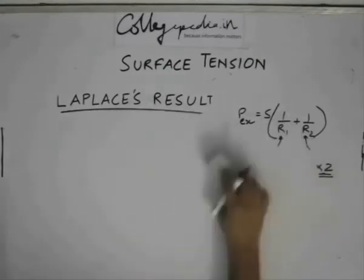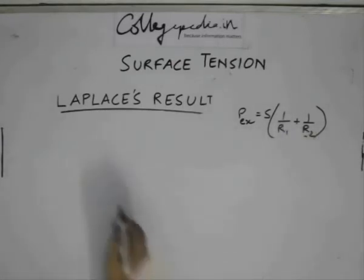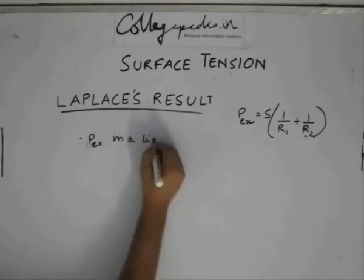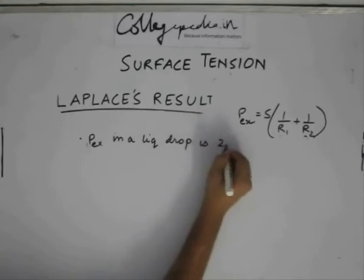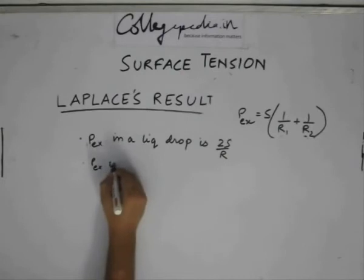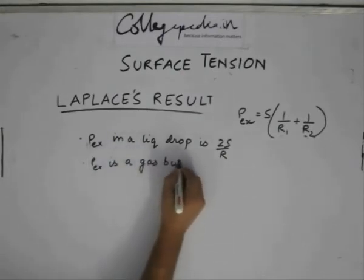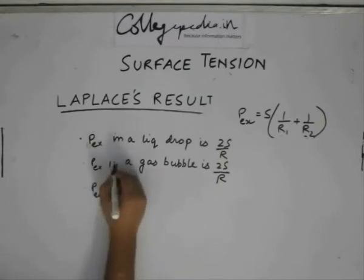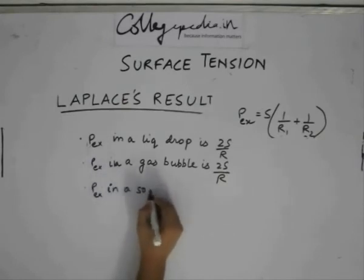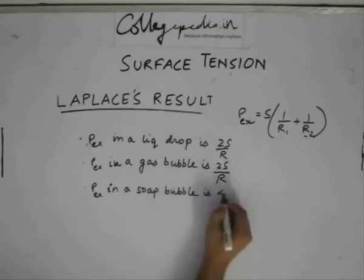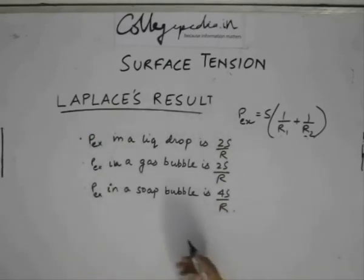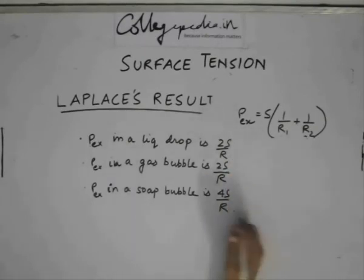Let me write some general formulae for excess pressure. Excess pressure in a liquid drop is 2s by r. Excess pressure in a gas bubble is again 2s by r. Excess pressure in a soap bubble is 4s by r. These can be remembered for very short questions or multiple choice type questions where you do not need to derive using force balance. You can remember some of these formulas to directly apply in the examination.